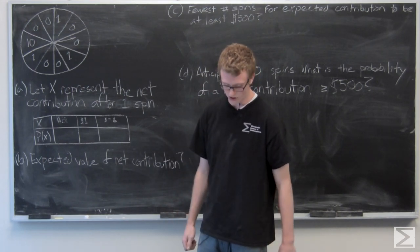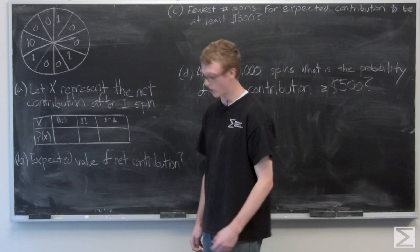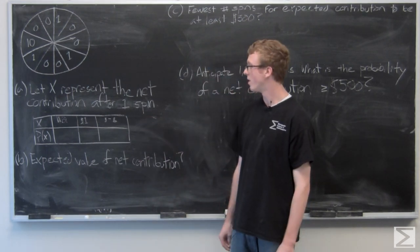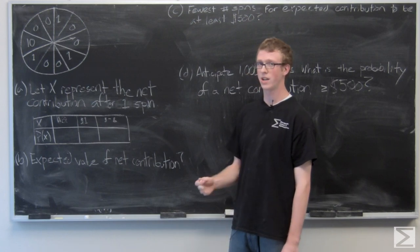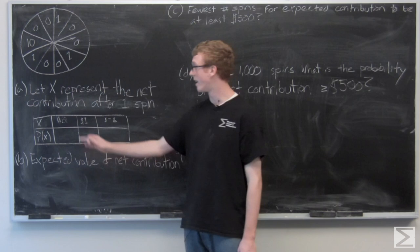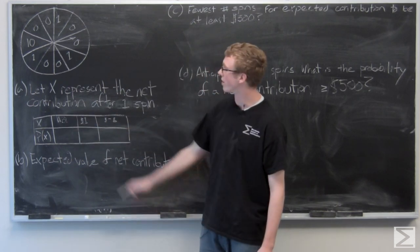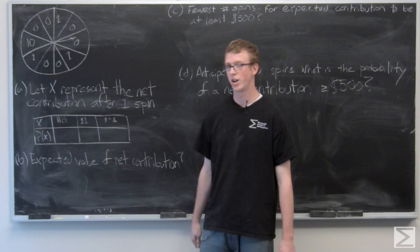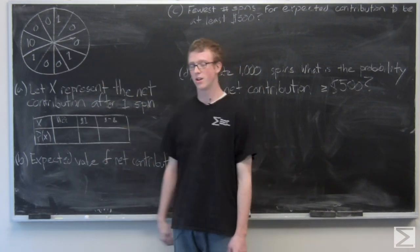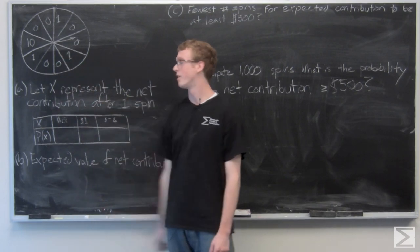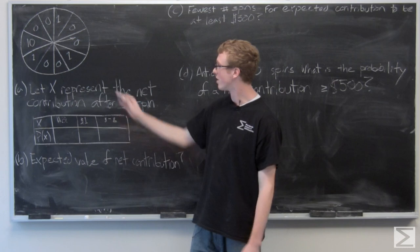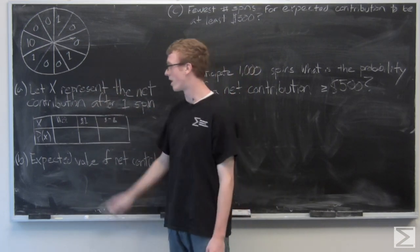The question says, let X represent the net contribution to the charity when one person plays and asks us to complete the table. So X is the net contribution. We're going to get $2 if the pointer lands on zero. We're going to get $1 to the charity if the pointer lands on one, two minus one. And we're going to lose $8 from the charity if the pointer lands on 10.